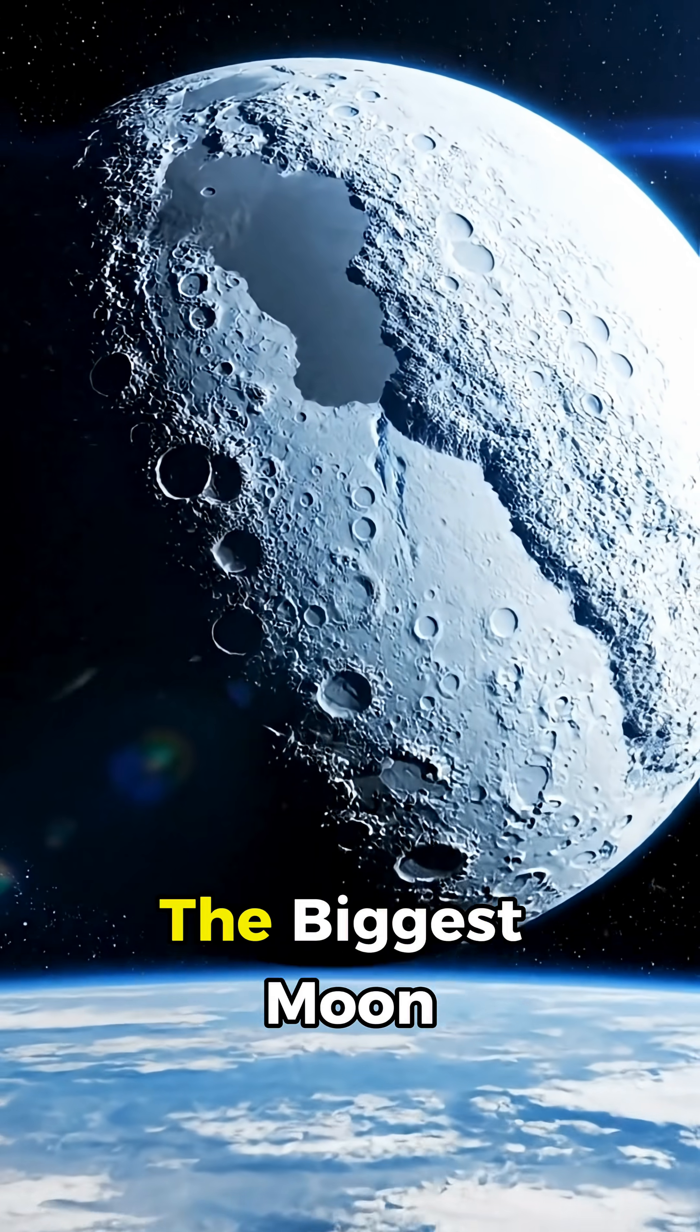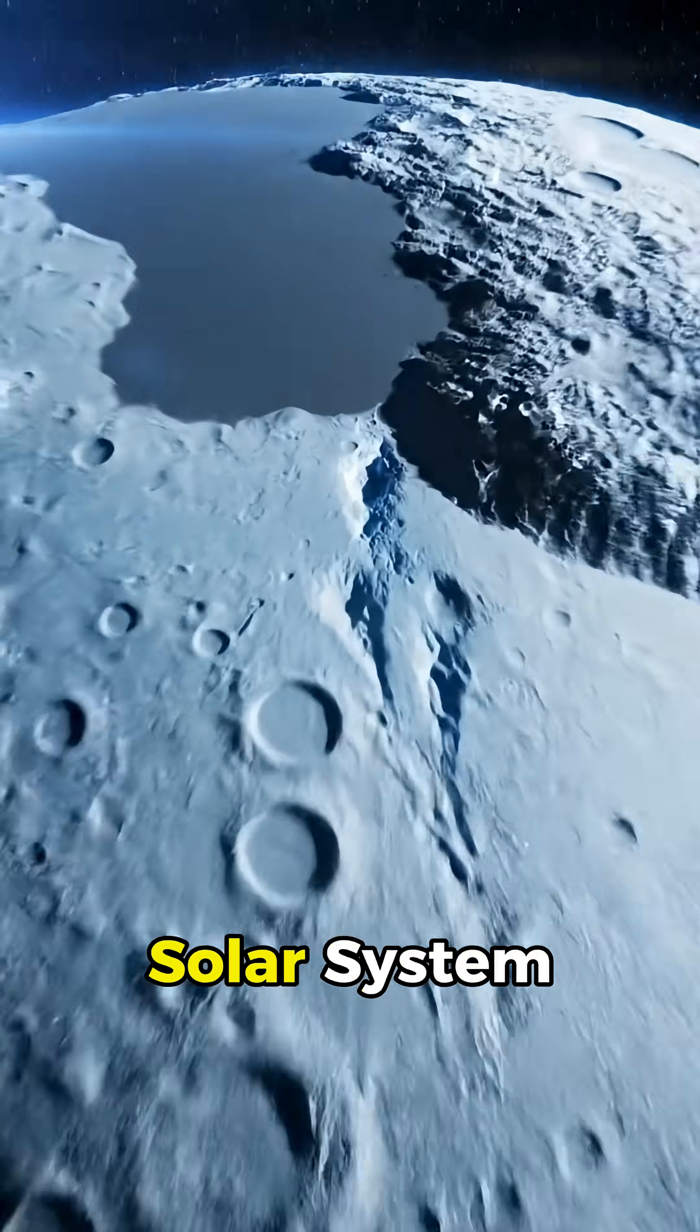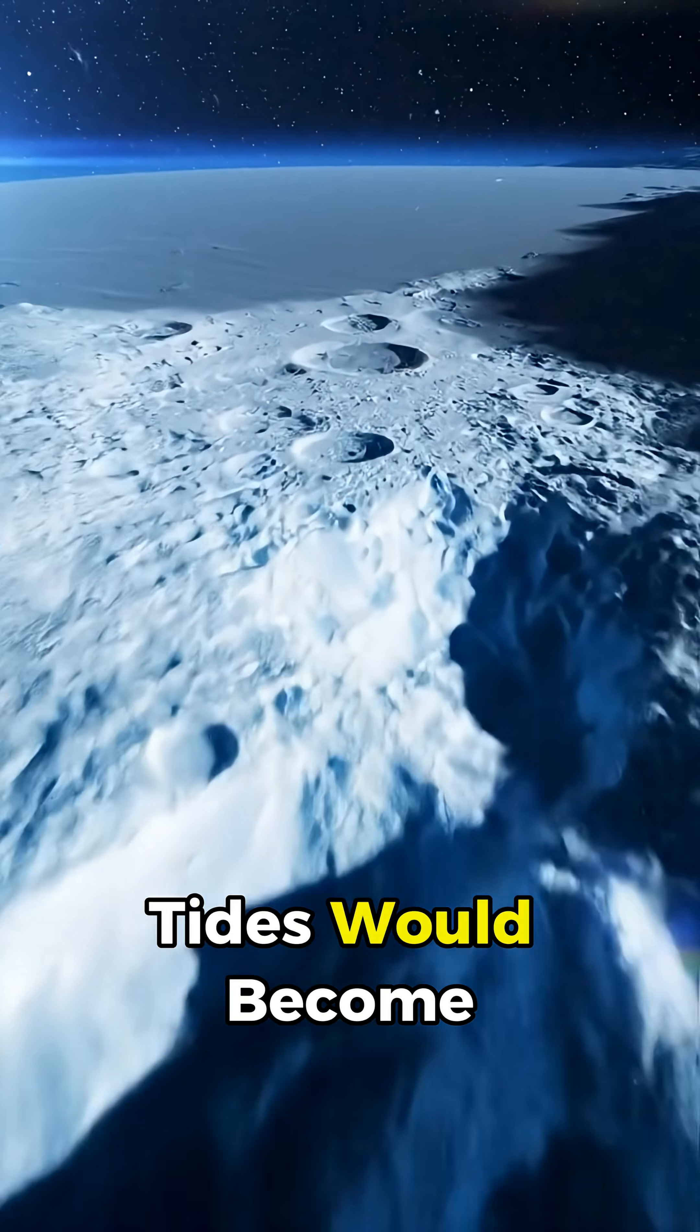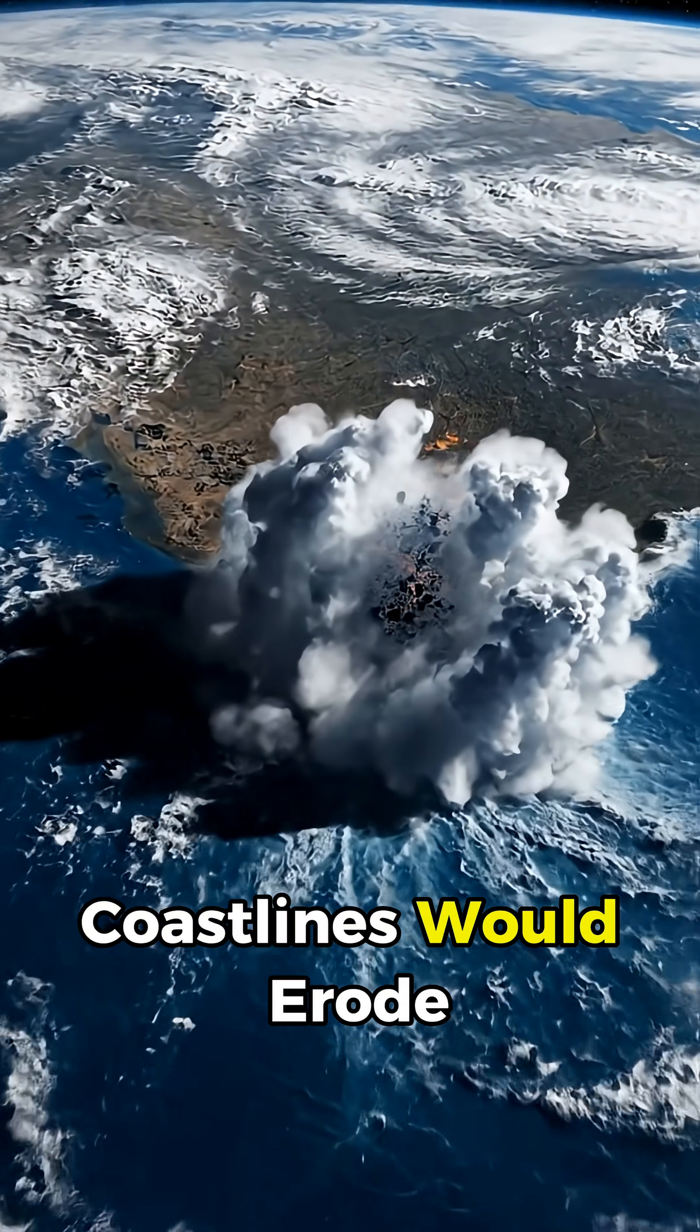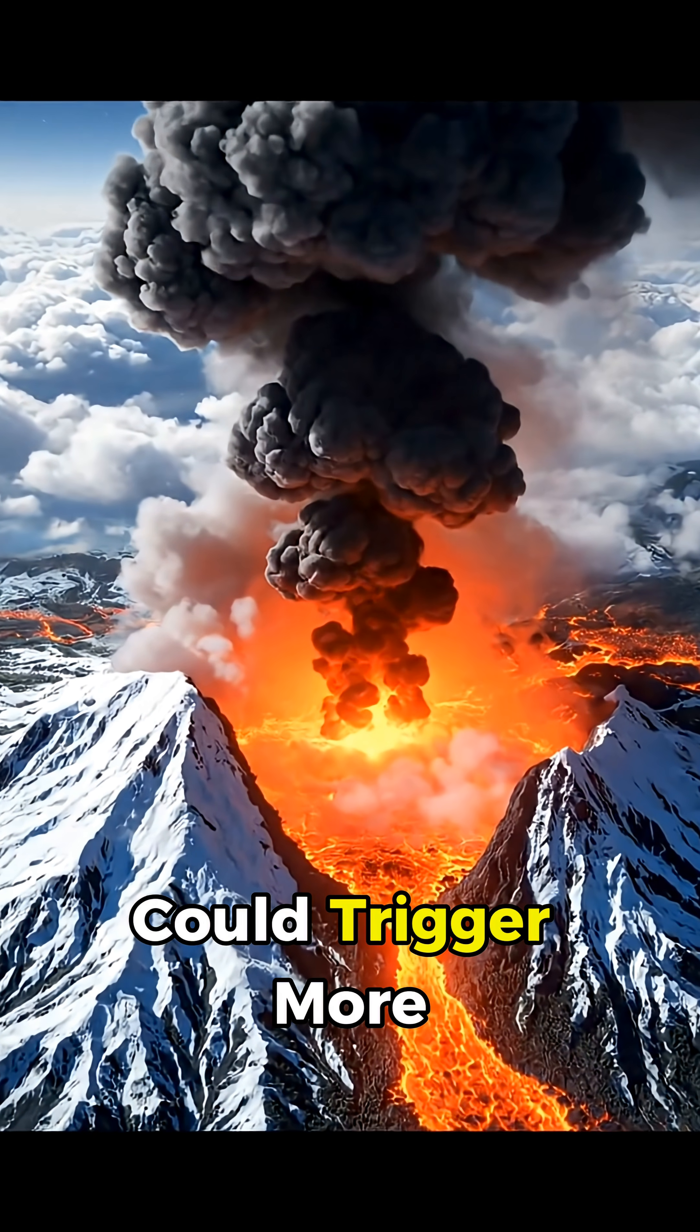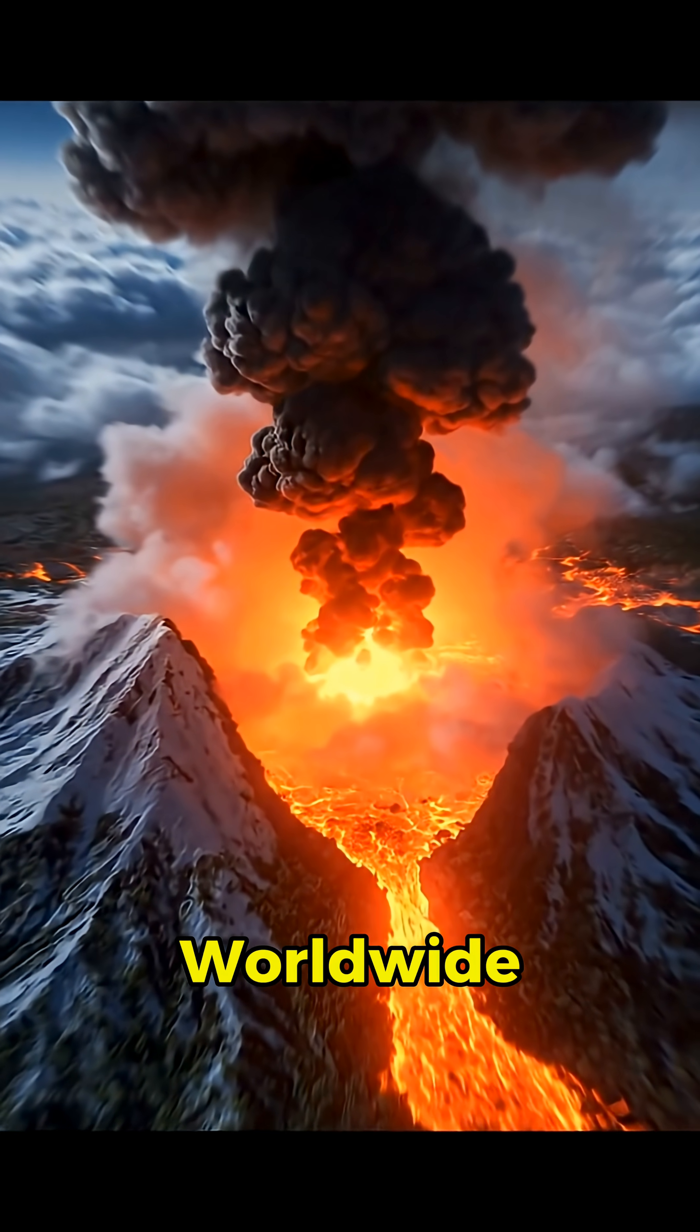Next is Ganymede, the biggest moon in the entire solar system. Swap it in, and the effects ramp up. Tides would become extreme, coastlines would erode rapidly, and the added stress on Earth's crust could trigger more earthquakes and volcanoes worldwide.